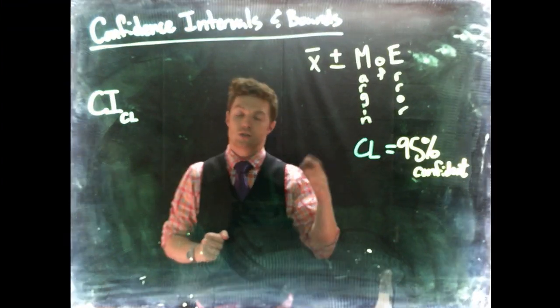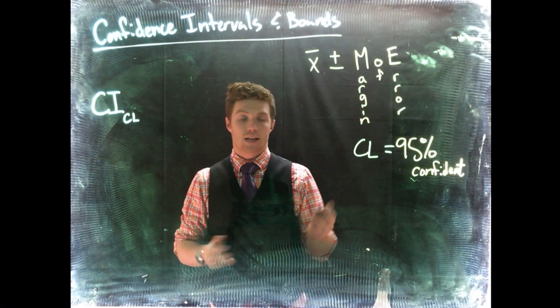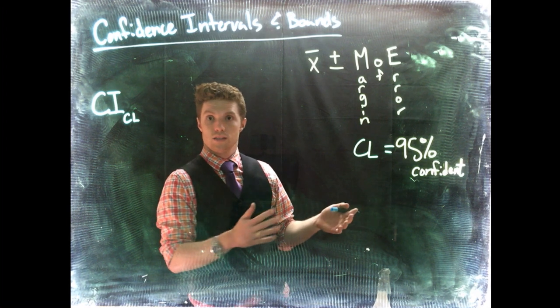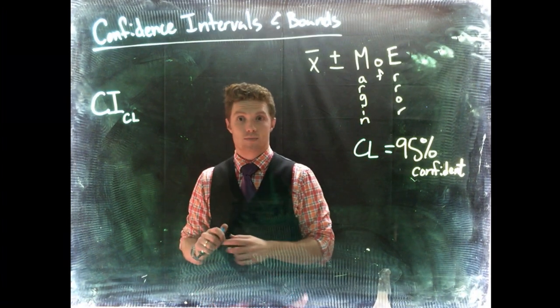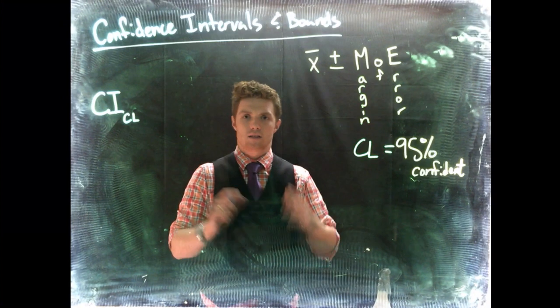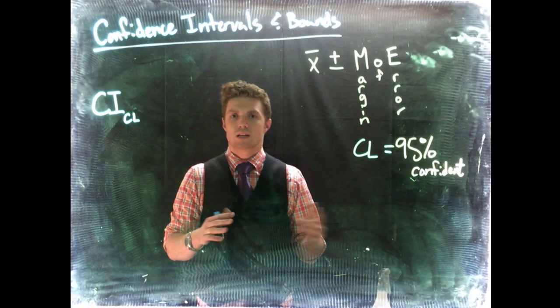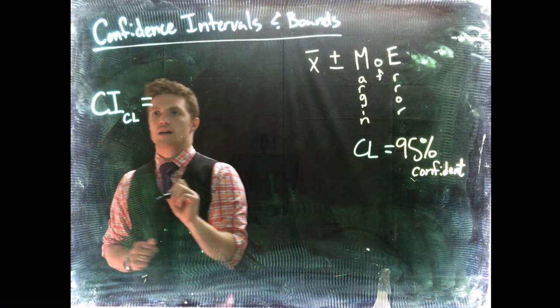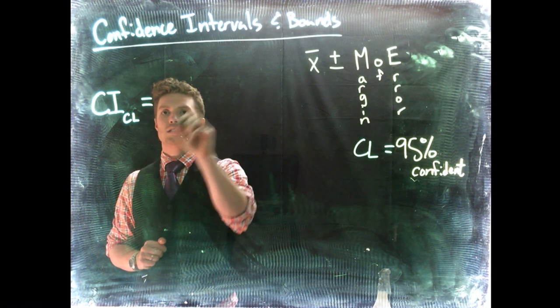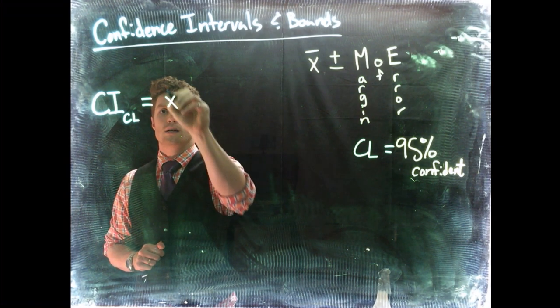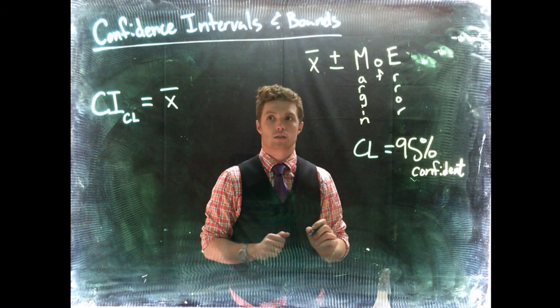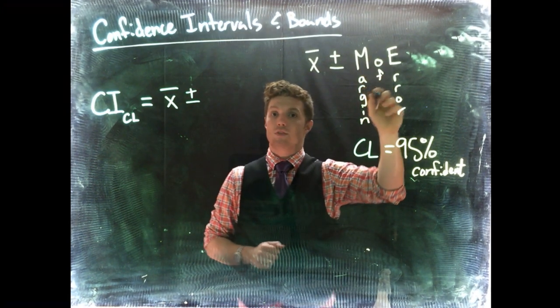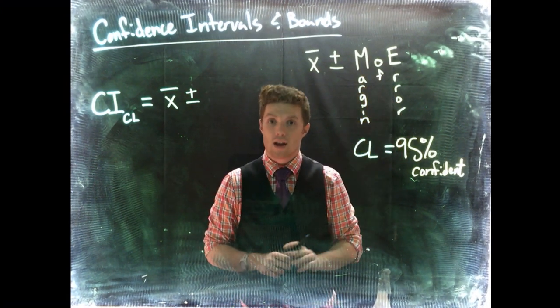We could do 95, we could do 85. It just has to be between, technically, 0 and 1, just like our probabilities. Most of the time they're like 80% and above. There are some special cases where they're lower. But we'll go ahead and say confidence interval at a specific confidence level equals x bar, the sample proportion. So now we need to do plus or minus. We need to figure out how do we calculate out this margin of error.